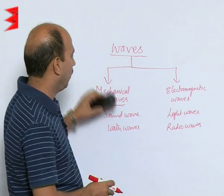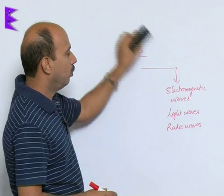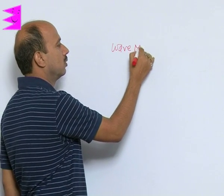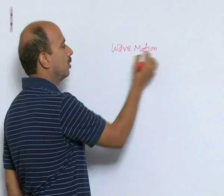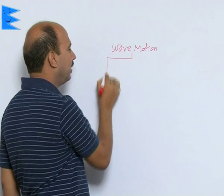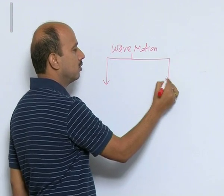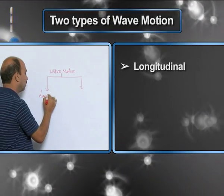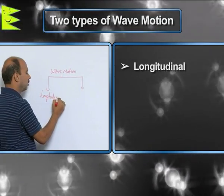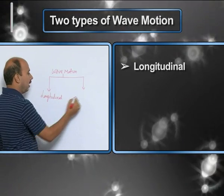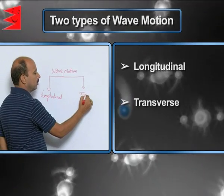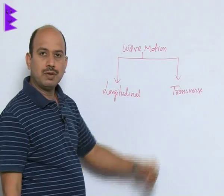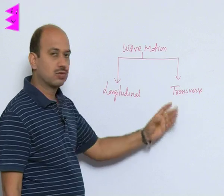In wave motion, we categorize it into two parts: one is longitudinal and another one is transverse. So there are two types of wave motion — longitudinal and transverse.